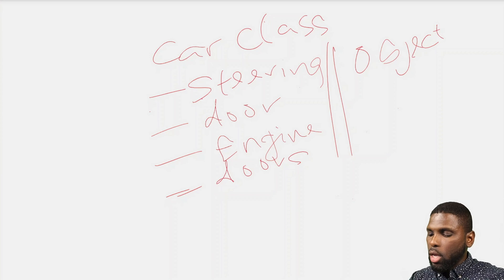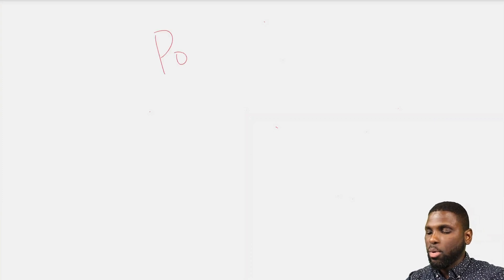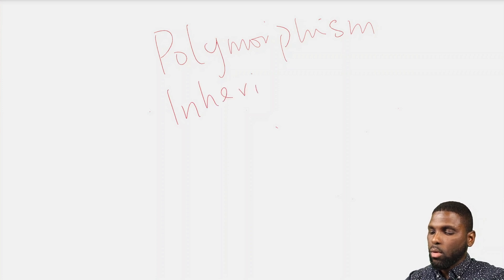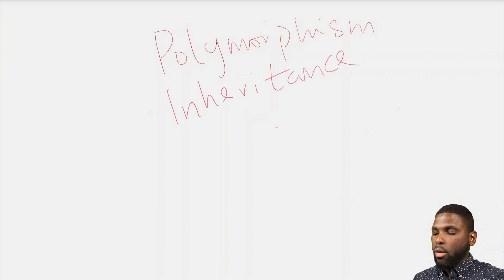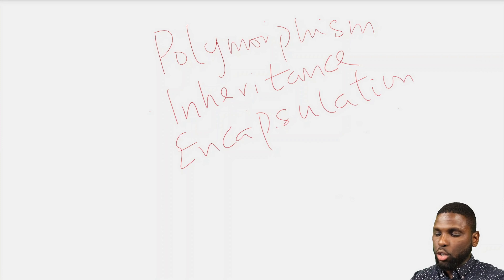There are different concepts in object-oriented programming I want us to understand, and we'll use the analogy of a car. There are four of them: polymorphism, inheritance, encapsulation, and abstraction.